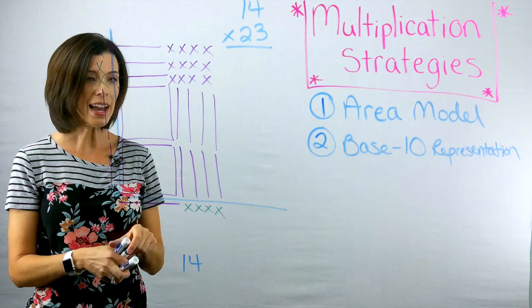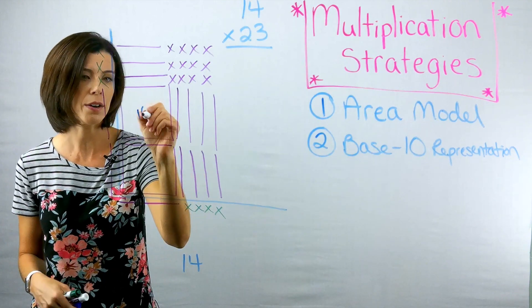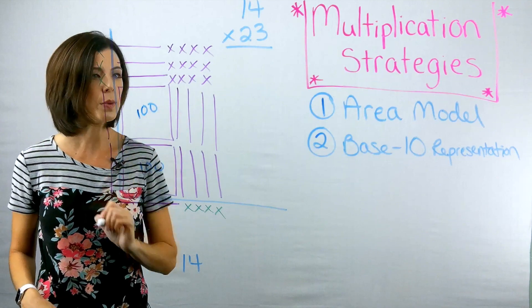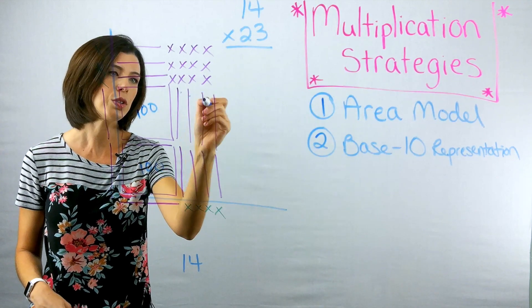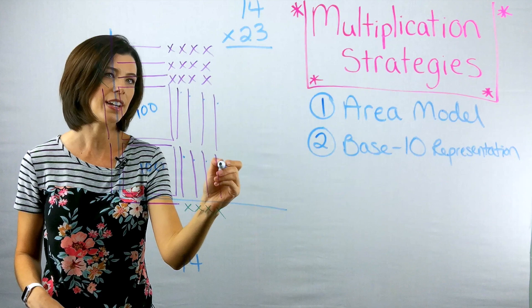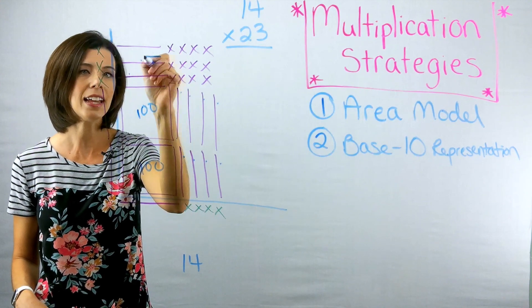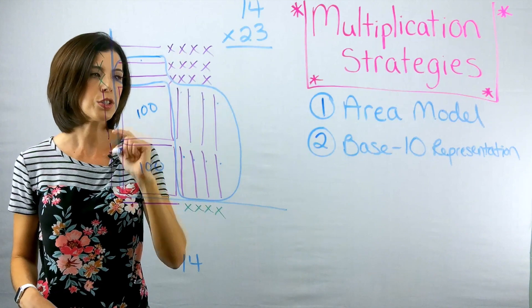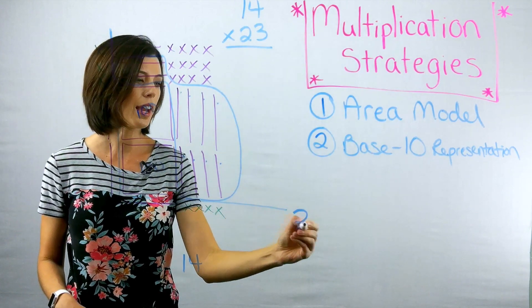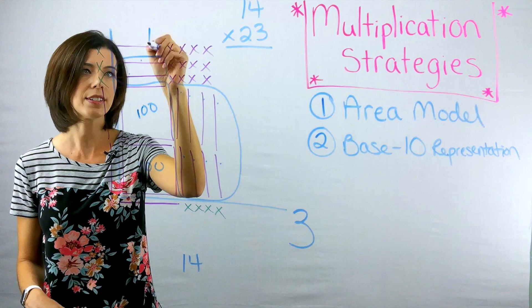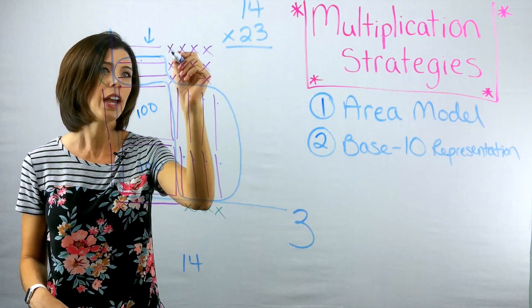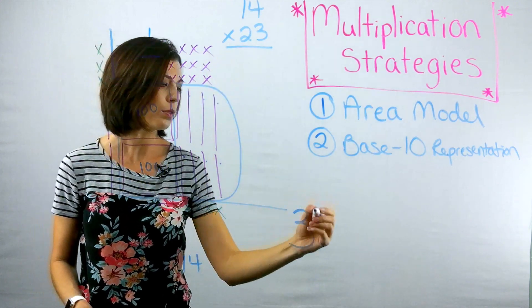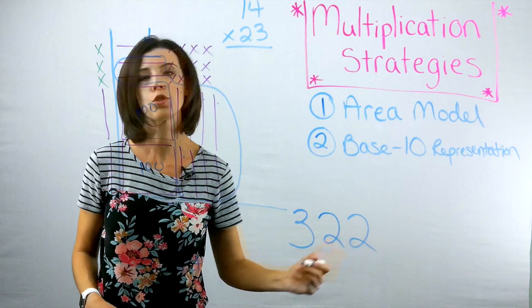Okay, so now I'm going to have to do some grouping. So I know I have 100. I have another 100. I see I have one, two, three, four, five, six, seven, eight, nine, 10. So I'm going to go ahead and group all of these into another 100. So now I have 300. Then I can see I have this extra 10 left over and 12. So 10 plus 12 would be 322.